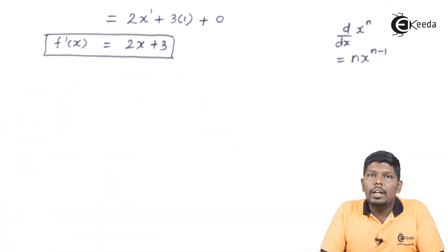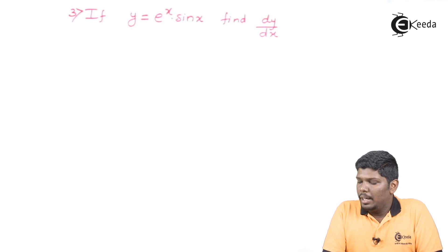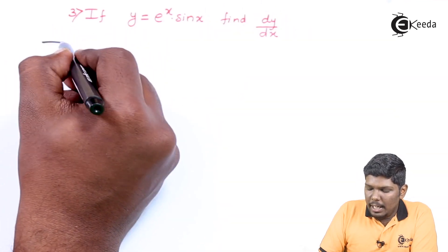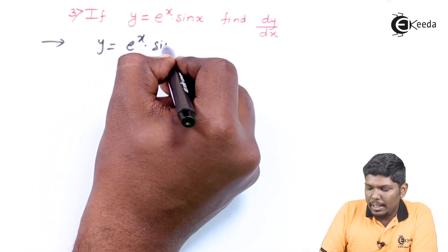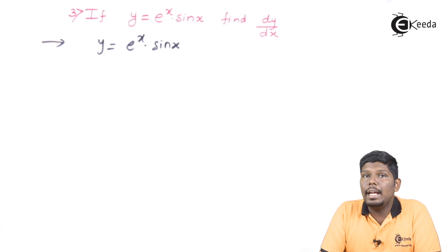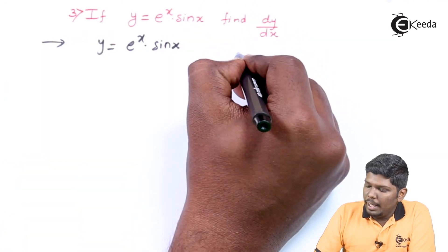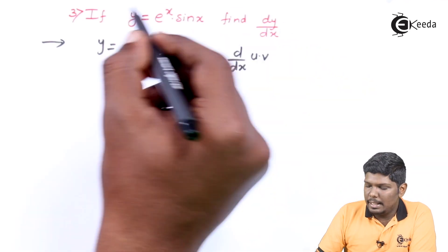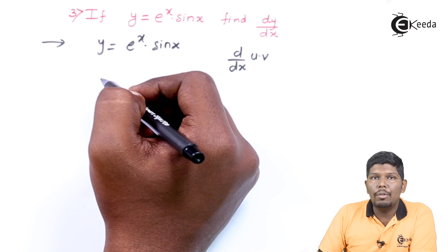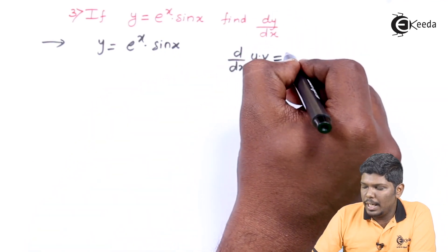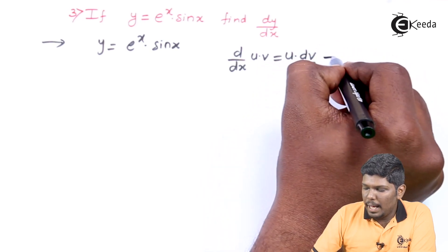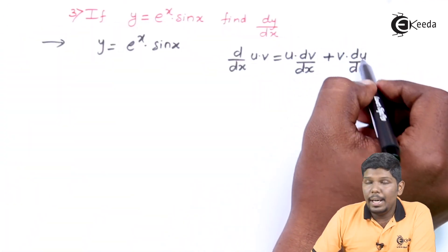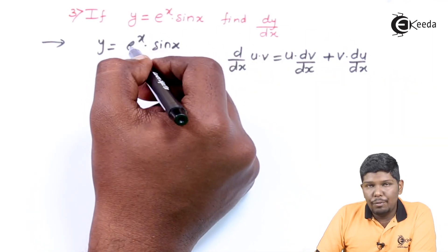Now the third problem: if y equals e raise to x into sin x, find dy/dx. Here two functions are being multiplied, so we use the UV rule. The UV rule states that d/dx of u into v equals u times dv/dx plus v times du/dx. Here u equals e raise to x and v equals sin x.